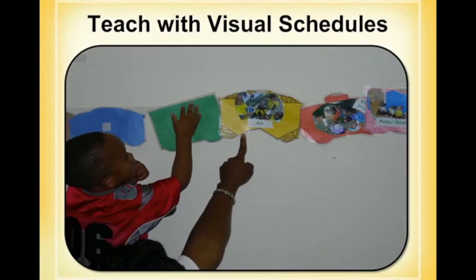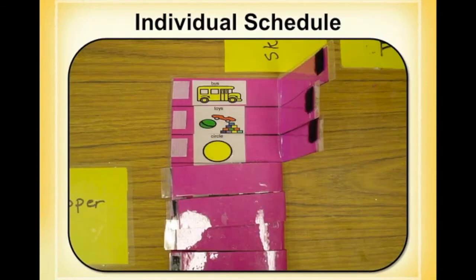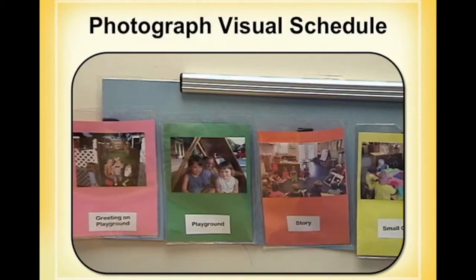Here are just some photo examples of various types of schedules. Here is teaching with a visual schedule so that children can see it visually with pictures. Here's an individual schedule for a particular child so they can open the little flap and know what comes next throughout the day. Here again is another photograph of a visual schedule that really helps children see what's coming up and what's next.